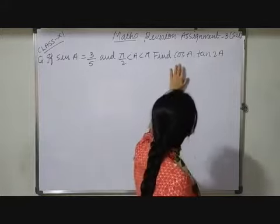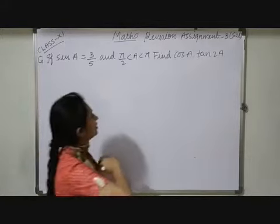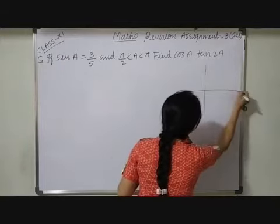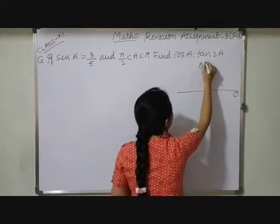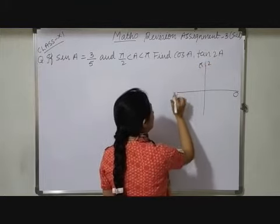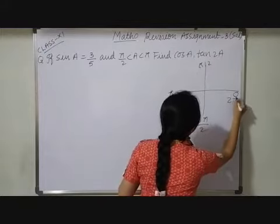So we have to find out here values of cos A and tan 2A. First of all, here you have to understand these all things. See here: 0 degrees, π/2, 2π/2 that is π, then 3π/2, and here 2π.